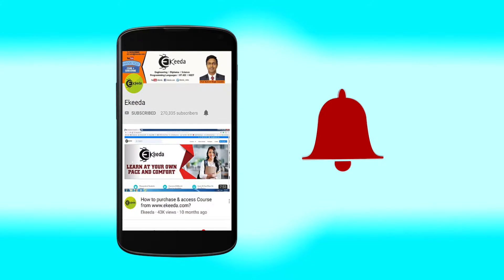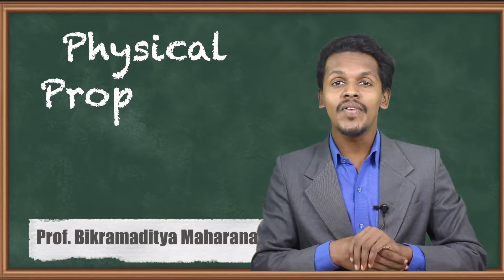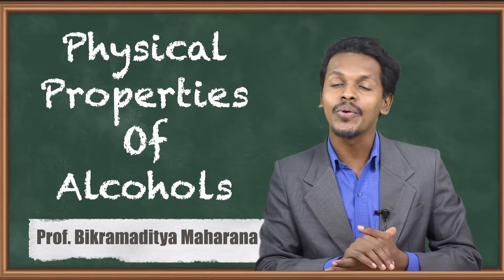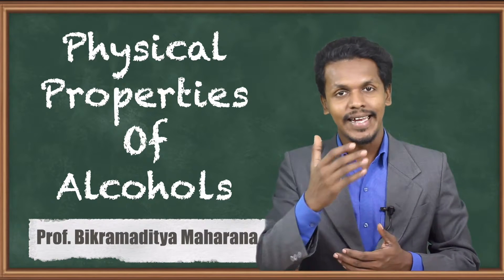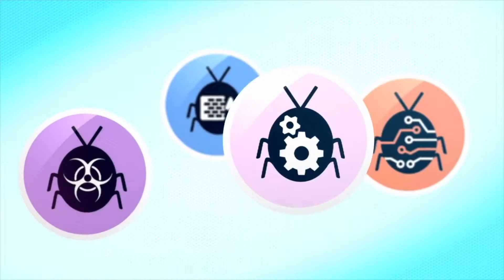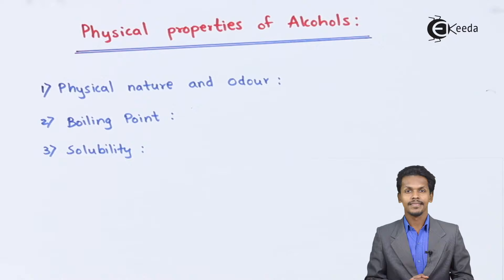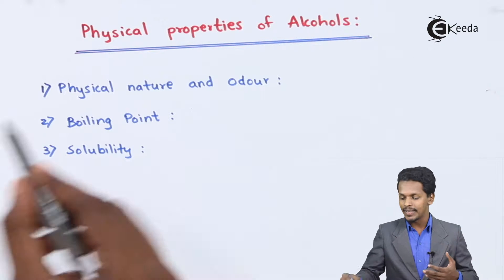In the previous lecture we understood the structure of alcohol. Now in this topic we are going to talk about the physical properties of alcohol. We are going to cover: physical nature and odor, boiling point, and solubility.